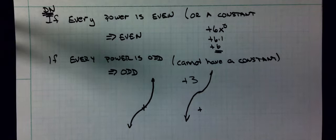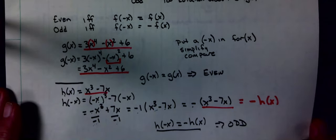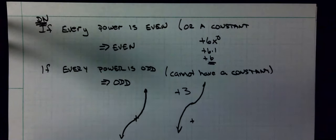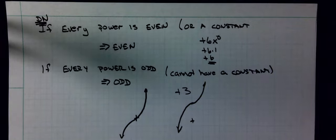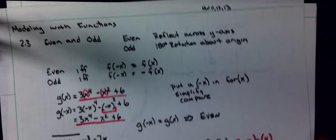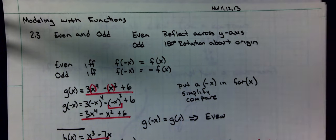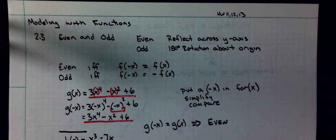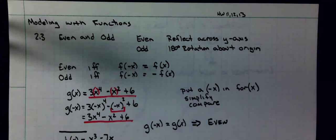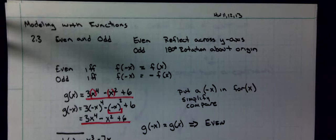If I ask you to show me algebraically whether it's even or odd, you've got to go through all this work. If I just ask you whether it's even or odd without justification, you can use this shortcut or you can look at the graph. If you're looking at the graph, you need to tell me it's even because it's a reflection across the y-axis, or it's odd because it's a 180-degree rotation about the origin. That will get you through questions three and four on section 2.3. There are only two homework questions.